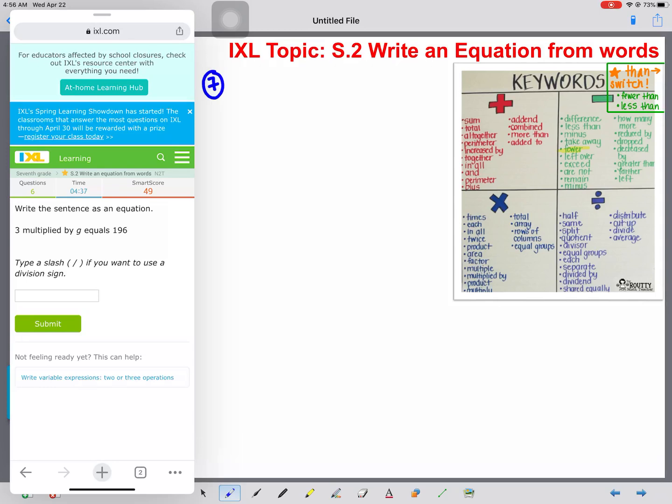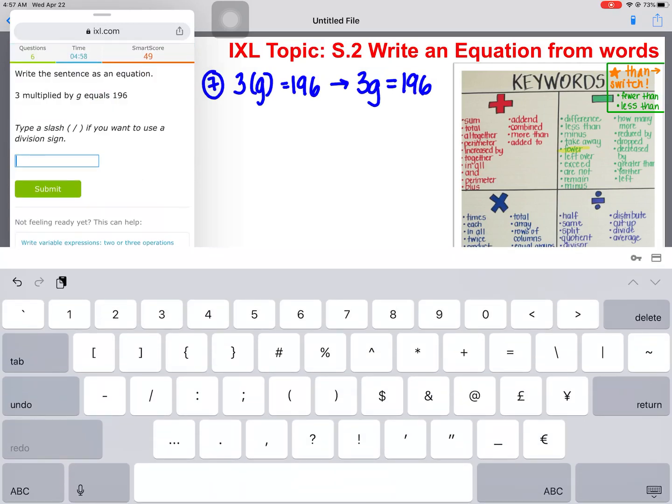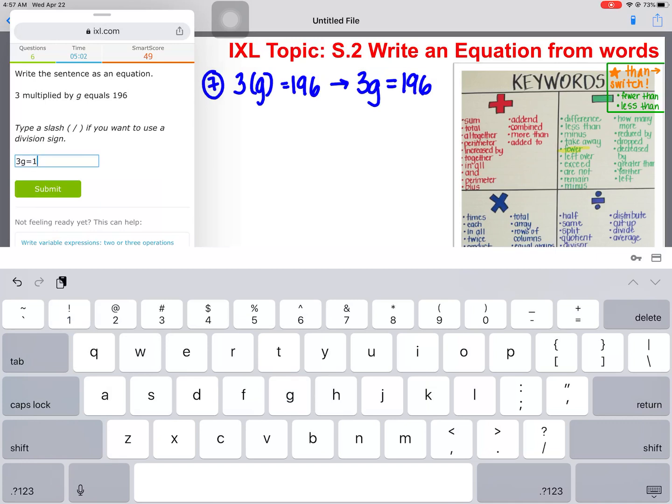So we have 3 multiplied by G equals 169. Remember, when we're multiplying, we're going to use parentheses always. But we also know in algebra that this is the same exact thing as 3G equals 196. So we're going to type in 3G equals 196.